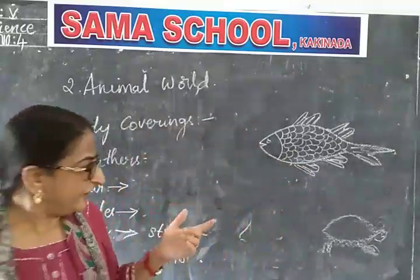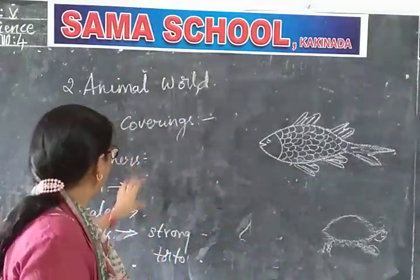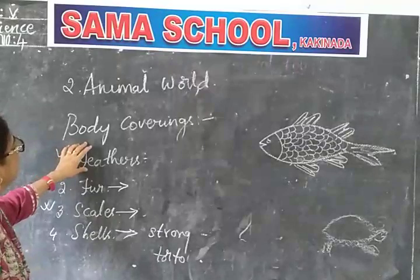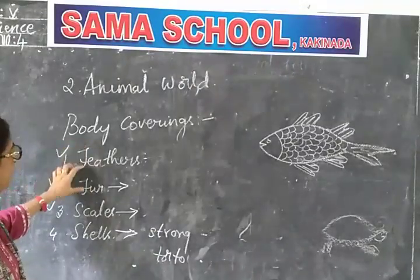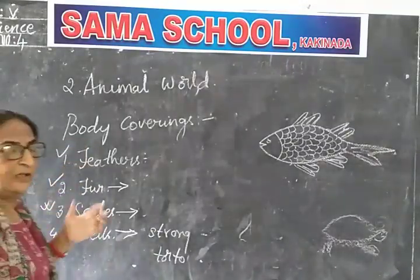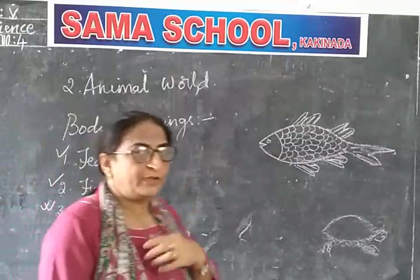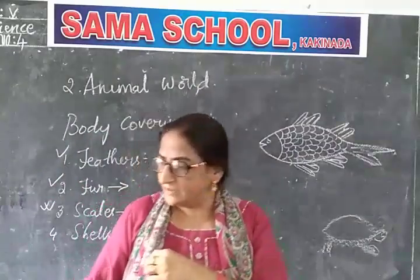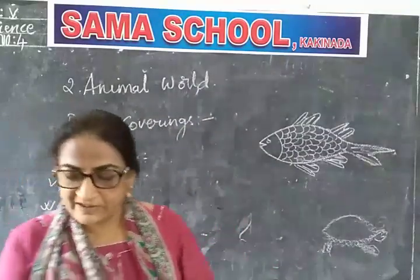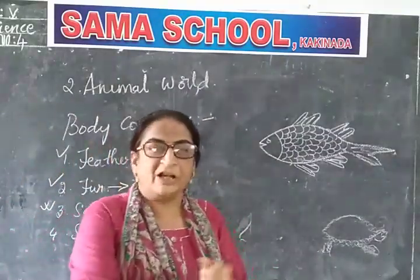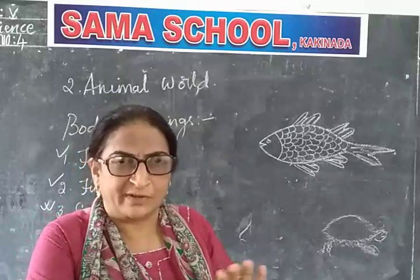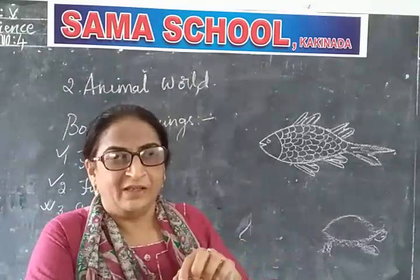So we have different body coverings in animals. What we have learnt is feathers, fur, scales, and shells. For example, if you check human beings — we are living on land, and our body covering is skin with a little hair all over the body.